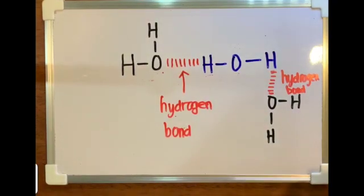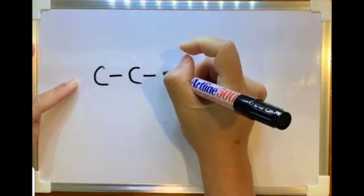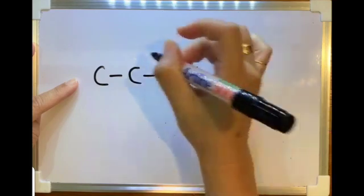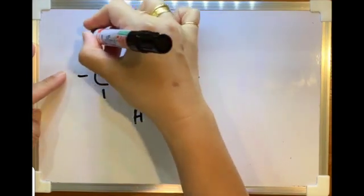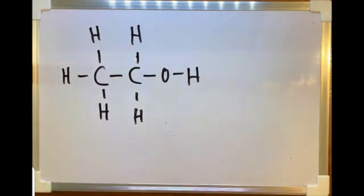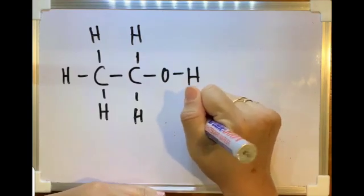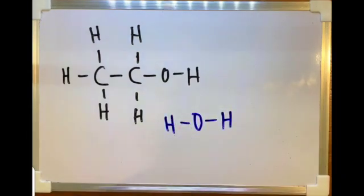Ethanol is one of the members of the alcohol group. Let's draw out the structural formula of ethanol. Now I would like to know whether ethanol can form hydrogen bond with water or not, and whether this hydrogen bond is going to help the solubility of ethanol. First, we need to check whether the molecules fulfill the two characteristics.